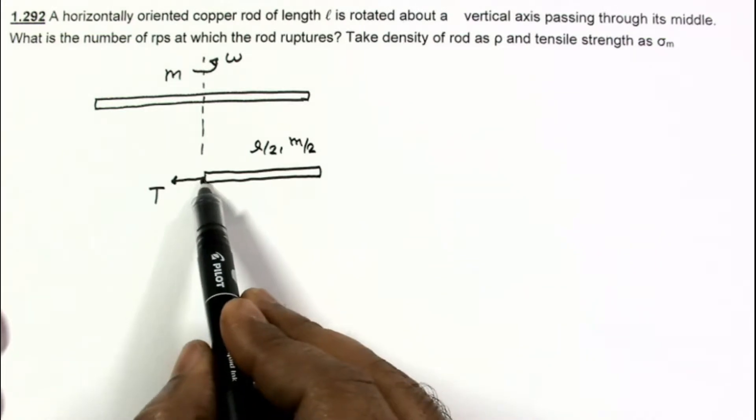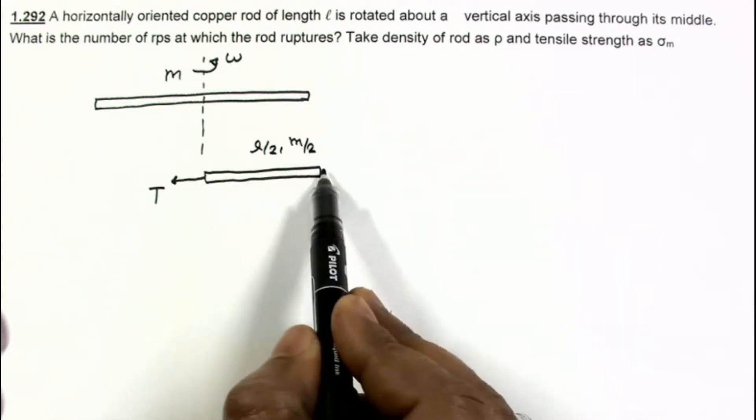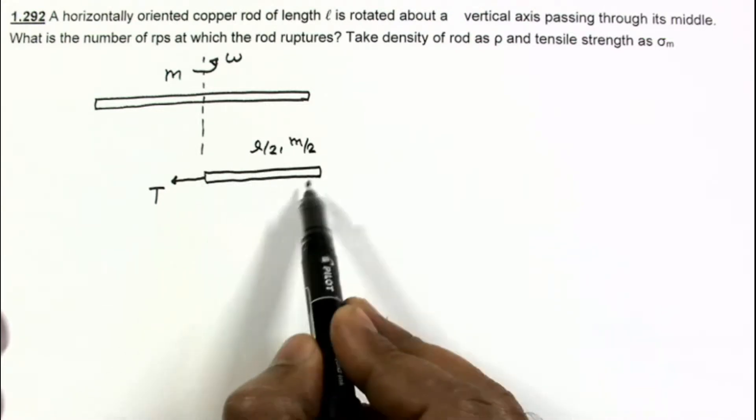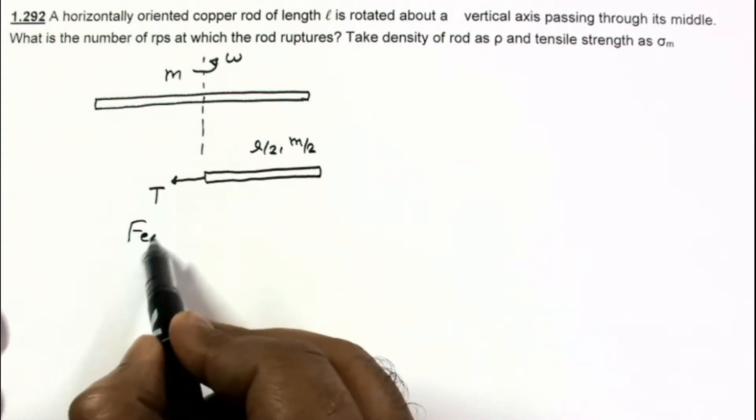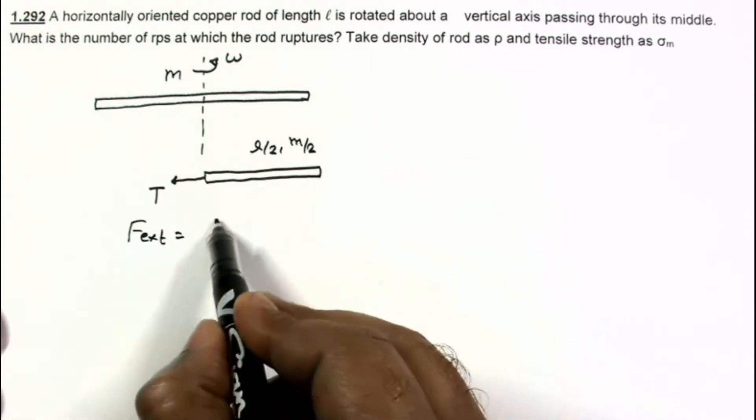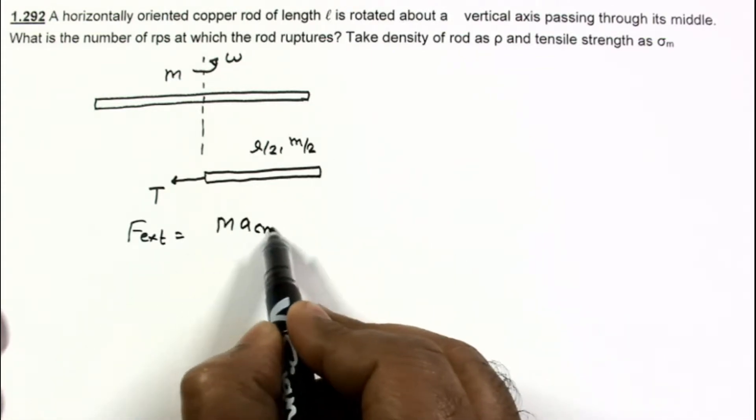This tension T is providing the necessary centripetal force for this circular motion. T is external force, and F_external on the system equals mass times acceleration of center of mass.